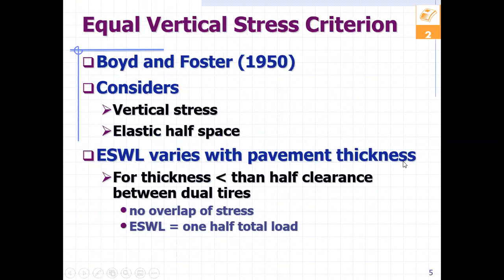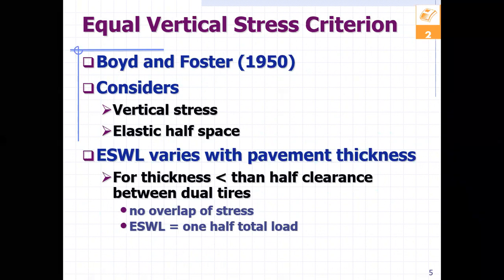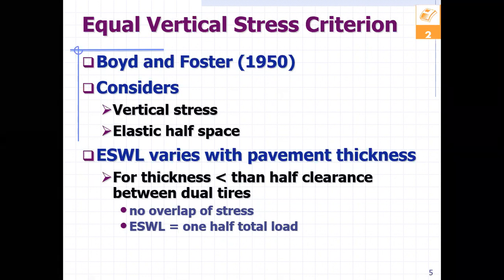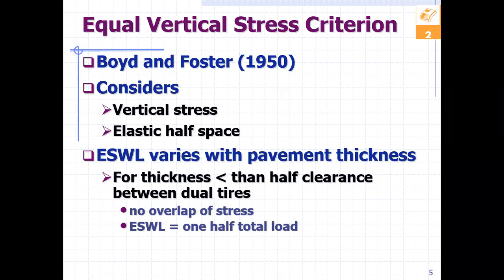Boyd and Foster in the 1950s came up with the first approach, a little more formal. They considered vertical stresses on an elastic half space, like what we have seen before in our analysis of stresses and strains. They identified that the equivalent single wheel load depends on the thickness of the pavement — a very thin pavement encounters a very different situation than a thick one.